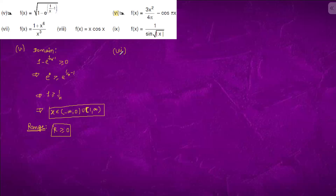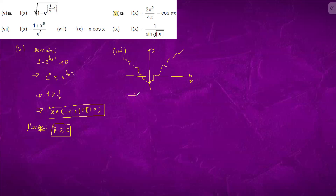Question number 6. We have f(x) equals 3x²/4π minus cos(πx). We can check: at x = 0 it is minus 1, and then it keeps going. We have to check whether this function is one-one or not. The range here is 0 to infinity.